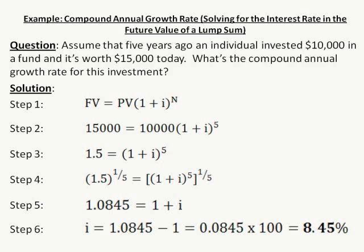Here's a hypothetical example solving for the compound annual growth rate. Let me read off the question. Assume that five years ago, an individual invested $10,000 in a fund, and it's worth $15,000 today. What's the compound annual growth rate for this investment?